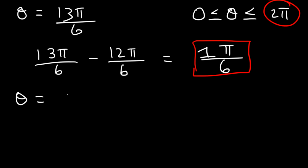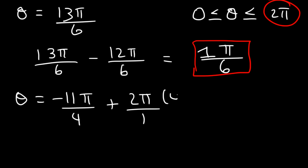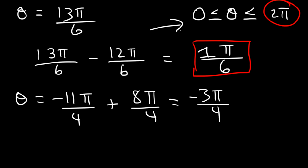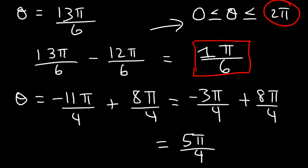What about the angle negative 11 pi over 4? Because it's negative, we need to add 2 pi. We multiply 2 pi by 4 over 4 to get 8 pi over 4. Negative 11 plus 8 is negative 3, giving negative 3 pi over 4, which is still not in range. So we add 8 pi over 4 again. Negative 3 plus 8 is 5, giving us 5 pi over 4, which is positive and in the range.